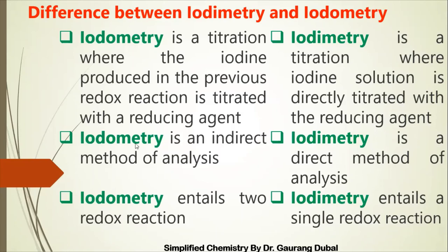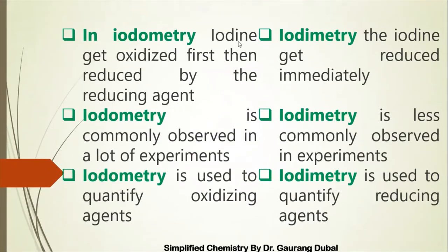Next: iodometry is an indirect method of analysis while iodimetry is a direct method of analysis. Also, iodometry entails two redox reactions while iodimetry entails only one redox reaction — that is a key difference. In iodometry, iodine gets oxidized first and then reduced by some reducing agents, while in iodimetry the iodine is reduced immediately and directly.